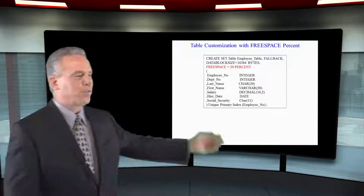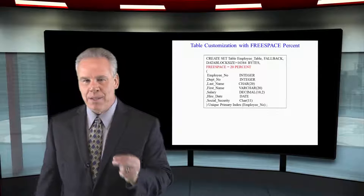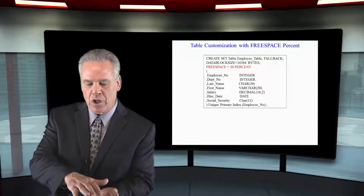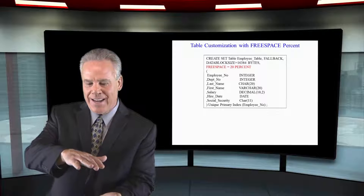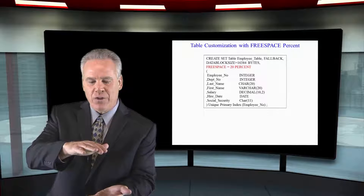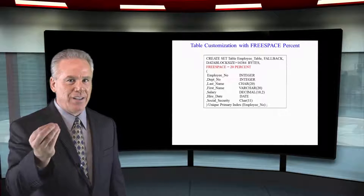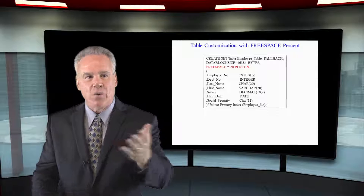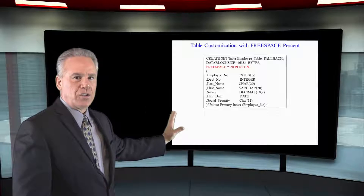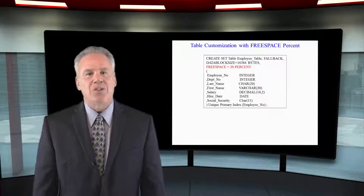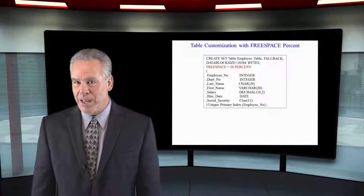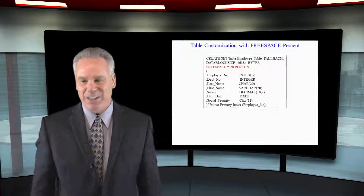Here you can see I have added free space equals 20%. What that means is, when you go to load this table on an AMP, it's going to load the data in data blocks inside cylinders. If you're using a fast load or a multi load, it says leave about 20% of that space free, so when you do other inserts during the day, it still has room to fill up. This applies to multi load, fast load, or the new TPT utilities — load or update. Any of those load utilities will reserve 20% of each cylinder, so that additional inserts and updates can take place without filling up the cylinder and having to go to another cylinder.